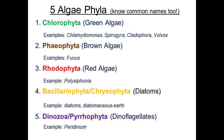Here are our five algae phyla that you must know — including the common names. Chlorophyta are the green algaes; they usually have chlorophylls A and B. Examples are Chlamydomonas, Spirogyra, Cladophora, and Volvox.